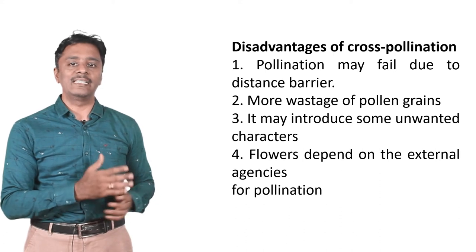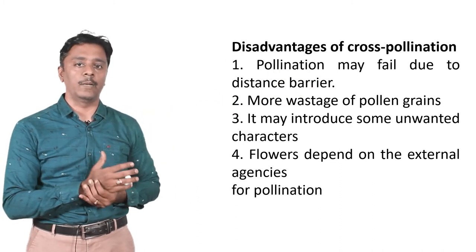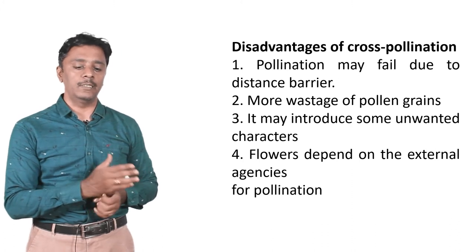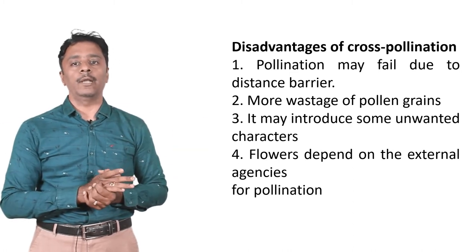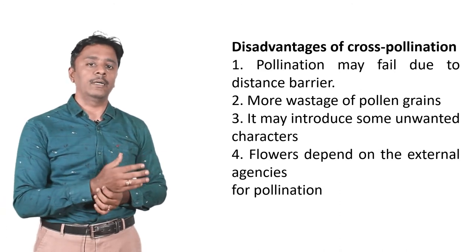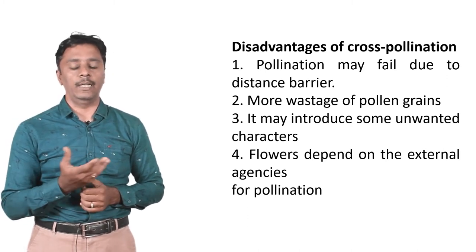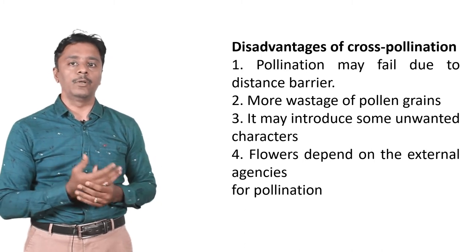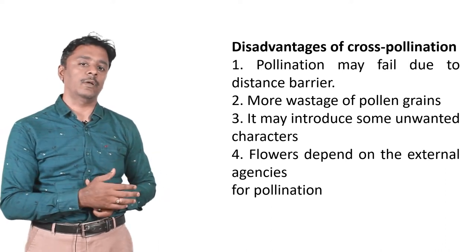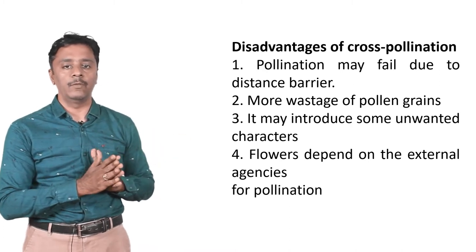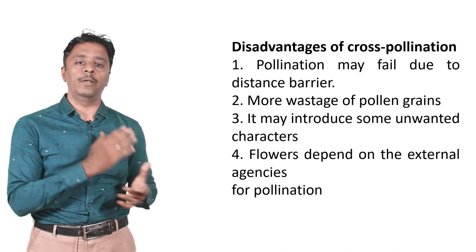Disadvantages of cross-pollination: pollination may fail due to distance barrier as pollen grains need to travel a longer distance; more wastage of pollen grains, since only a few pollen grains successfully transfer; it may introduce some unwanted characteristics, like unexpected changes in fruit sweetness or color; flowers depend on external agencies for pollination — if wind or water is not present, pollination cannot happen.